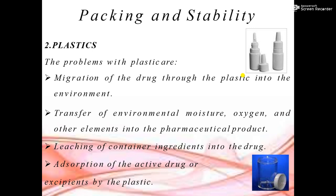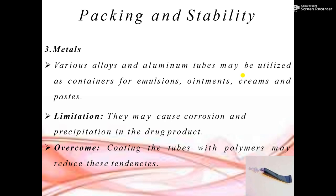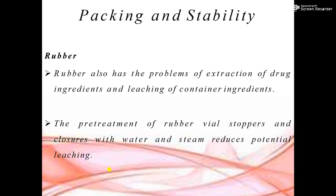For packaging, different containers are used including glass and metals. Metals such as alloys and aluminium tubes may be used as containers for emulsions, ointments, creams, and pastes. However, metals may cause corrosion and precipitation in drug products. Coatings with polymers can reduce these tendencies. Rubber can also be used, but it has problems with extraction of drug ingredients and leaching; pre-treatment of rubber stoppers and closures with water and steam reduces the potential for leaching.